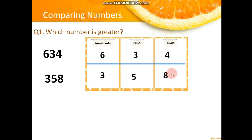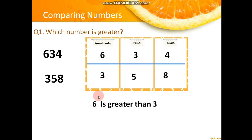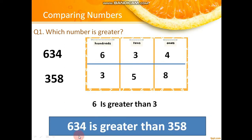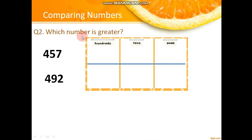To find the greater number, we follow the same procedure. We compare the numbers at hundreds place — we compare 6 and 3, and we find that 6 is greater than 3. It is very clear that by comparing the hundreds place, we can find the greater number. So 634 is greater than 358.